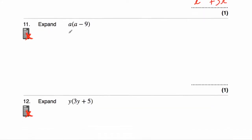Question number eleven asks us to expand a(a − 9). We need to multiply what's inside the brackets by a. a times a would be a squared. Then we've got our minus. And a times nine — put them together — that would be 9a. The answer is a² − 9a.